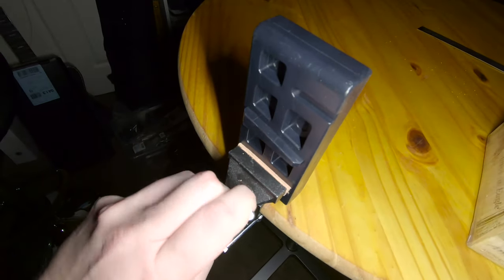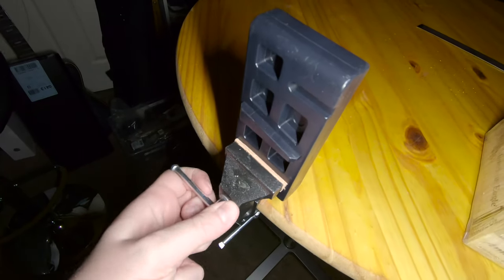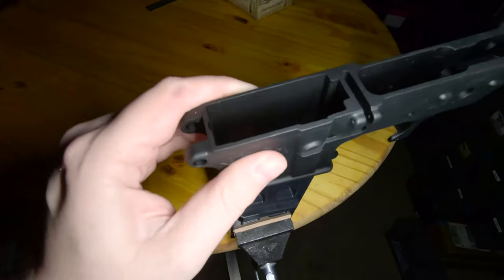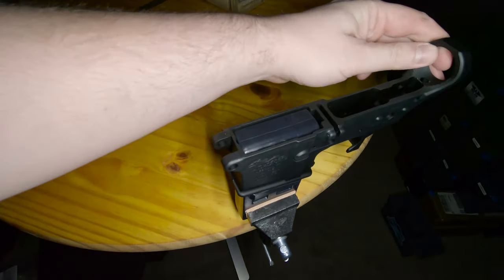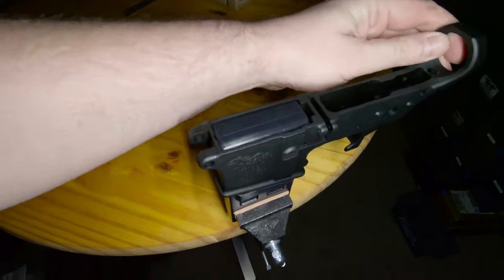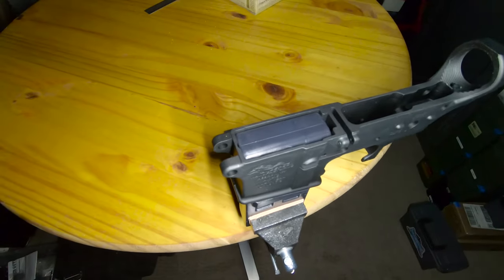The jaws of the vice also get as tight as I would want to make them, and it's able to hold things pretty darn securely. Shaking the whole table.